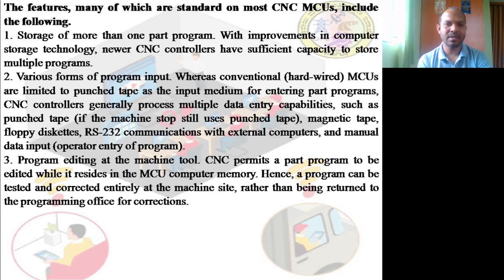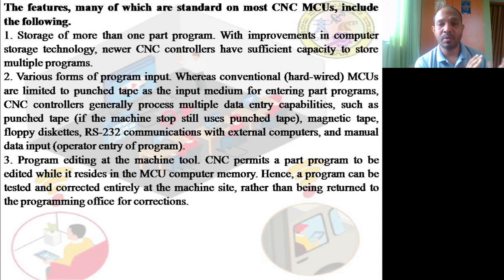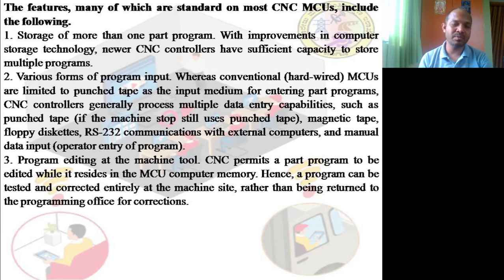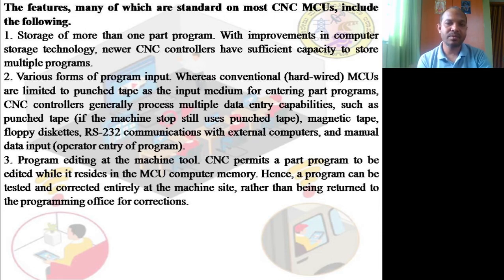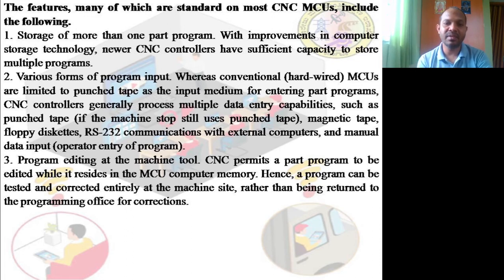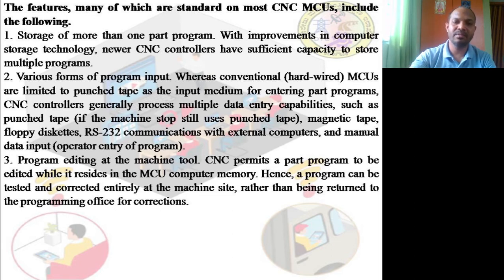Another CNC feature is program editing at the machine tool level itself. Practically, during the process, if problems are found, they can be edited right at the machine. CNC permits part programs to be edited while residing in the machine control unit's computer memory. The program can be tested and corrected entirely at the machine site rather than being returned to the programming office for corrections.